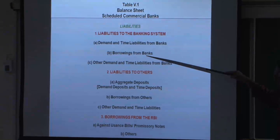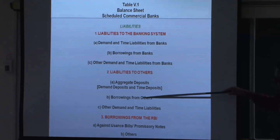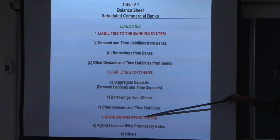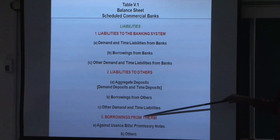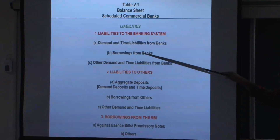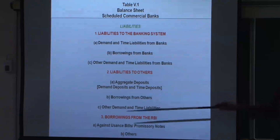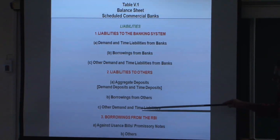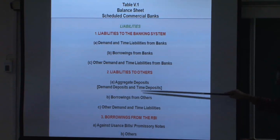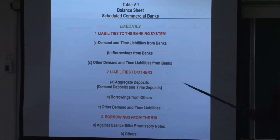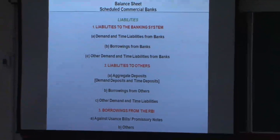Then we have liabilities to others — aggregate deposits of demand and time deposits — which is our money, company money, etcetera. Item A is very easy to understand. Now, what I will go into is the borrowings: borrowing from banks, borrowing from others, and the big red item here — borrowing from the RBI. I need to explain these three categories of borrowings, then I will discuss the C item — other demand and time liabilities.